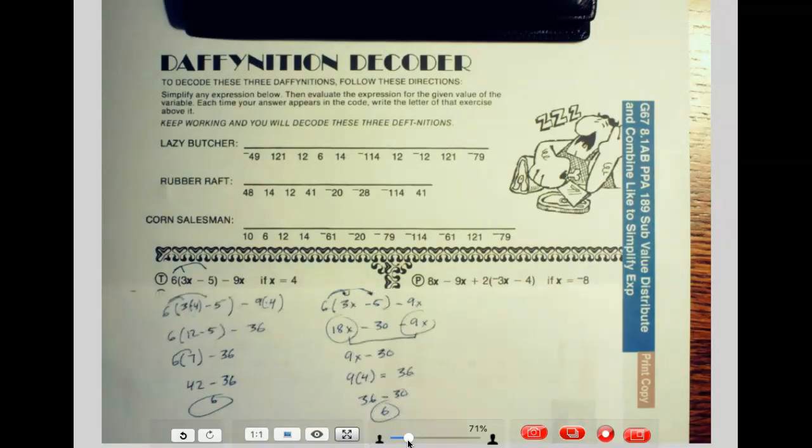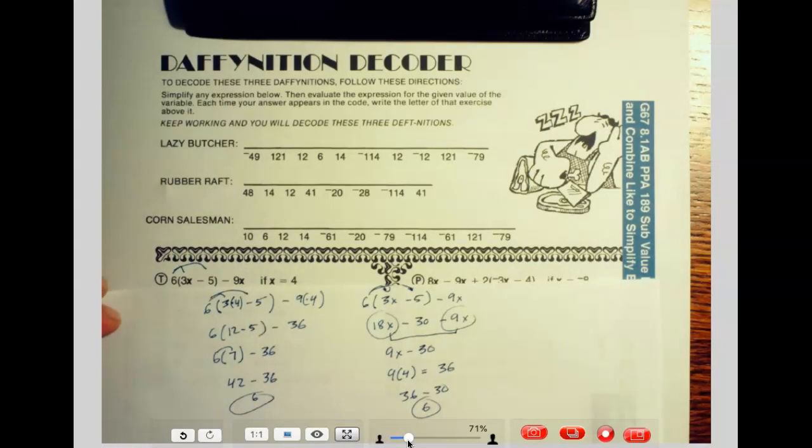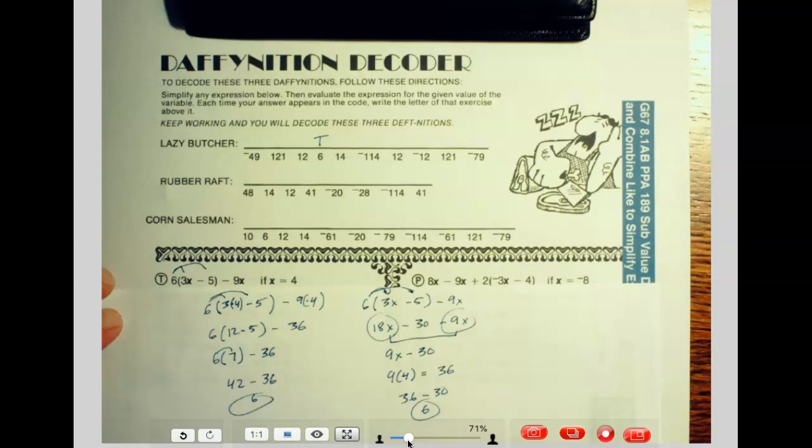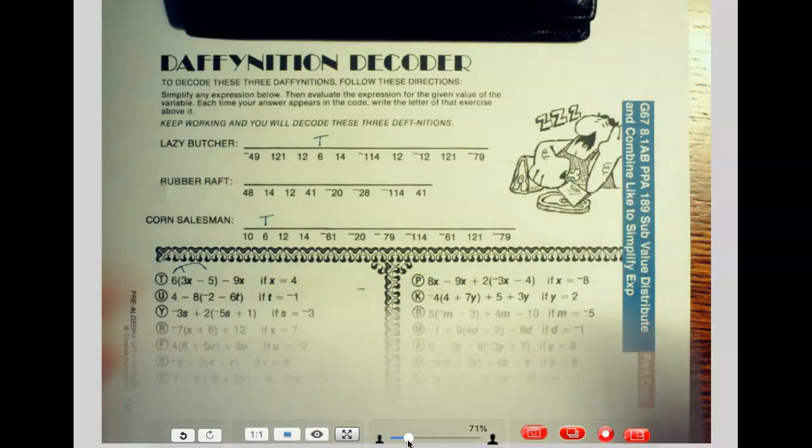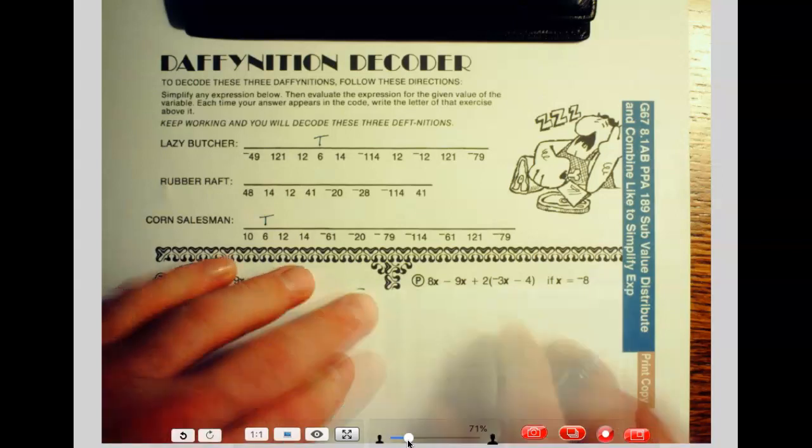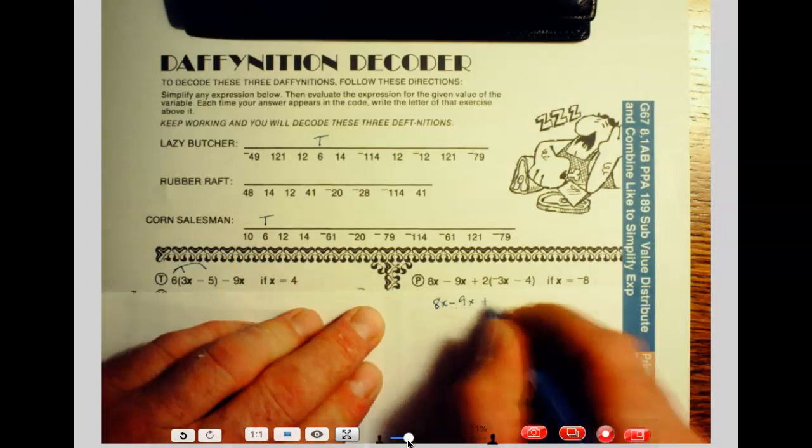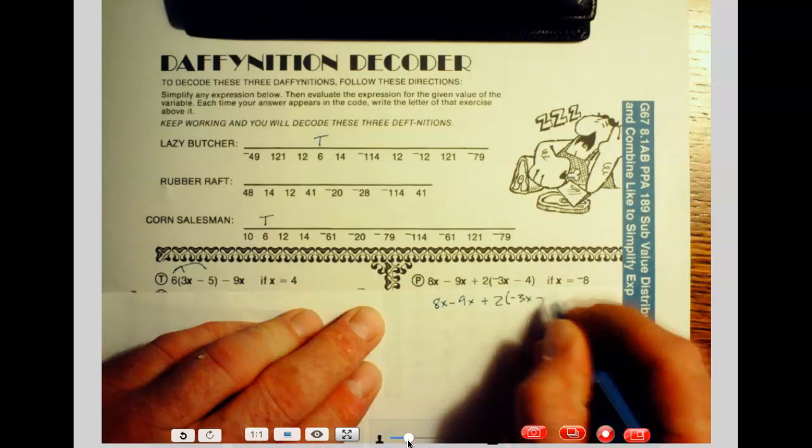We switched to a different piece of paper here. So what do we do here? For 6, we go ahead and put in t. I think we put it anywhere there's a 6. But if that's wrong, I'm going to live with it because I really don't care about that, I'm just caring about the math. Alright, so now we've got 8x minus 9x plus 2 times a negative 3x minus 4.